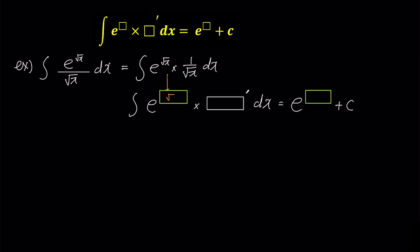Naturally, we'll be putting the square root x in the first green box, and only the derivative of square root x for the box prime, which is 1 over 2 times square root x.